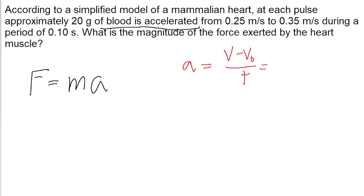And in this problem, we're told that the blood accelerates from 0.25 meters per second to 0.35 meters per second. So that's 0.35 meters per second minus 0.25 meters per second,